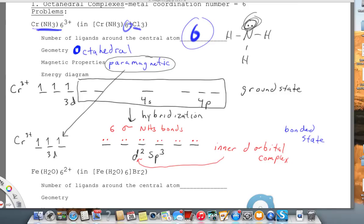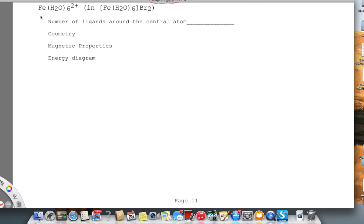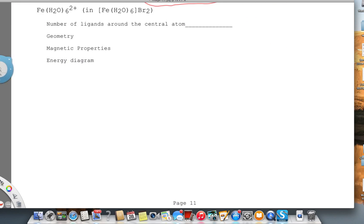In the previous video, I showed you the hybridization of chromium 3+, where we had D2sp3, and that's an inner d-orbital complex. This time, I'm going to show you the hybridization of an iron complex.